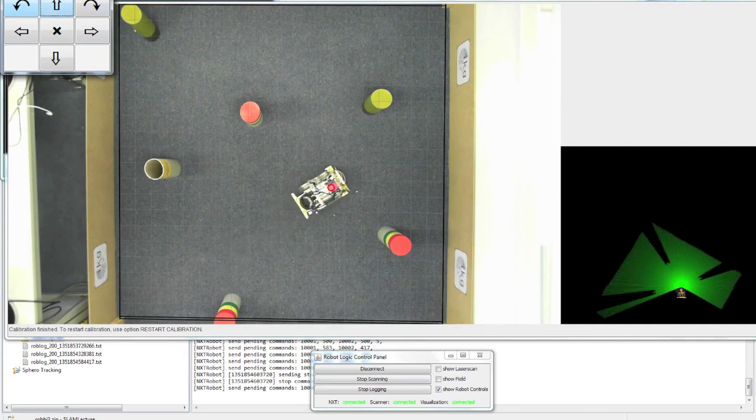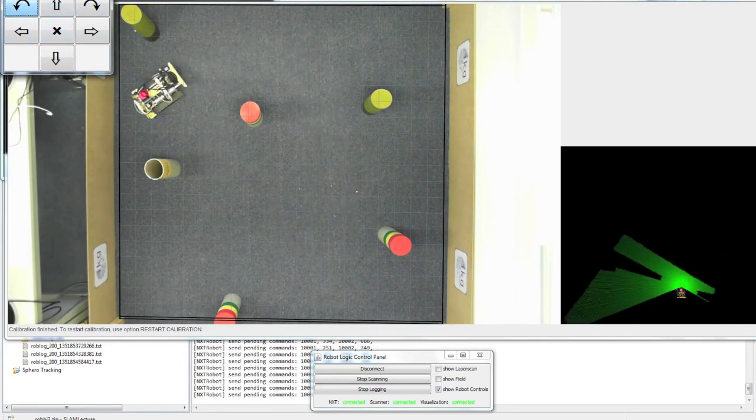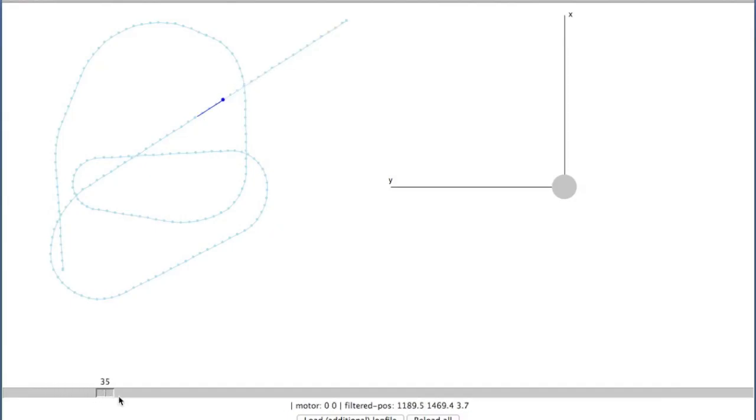We will steer the robot through this arena and record the motor control and LiDAR scans. We will then set up a motion model and determine the trajectory of the robot from the motor control data.